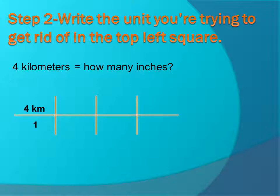And under that, we just put 1 because 4 kilometers over 1 or anything over 1 is just itself. So 1 is just really a placeholder. It doesn't really mean anything.